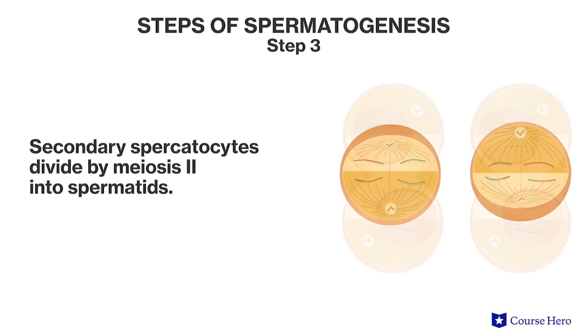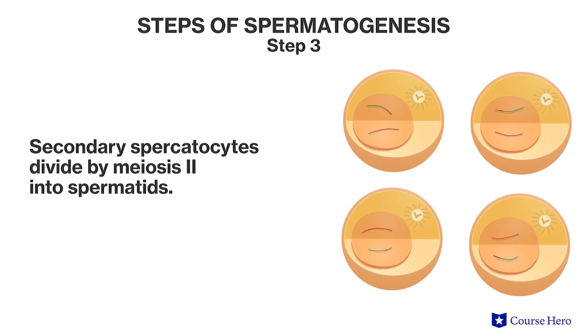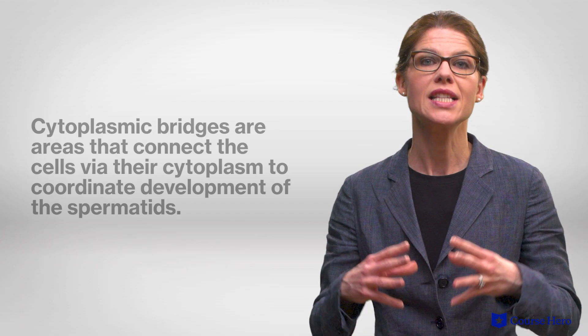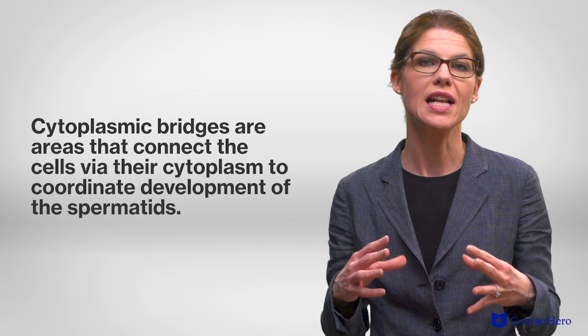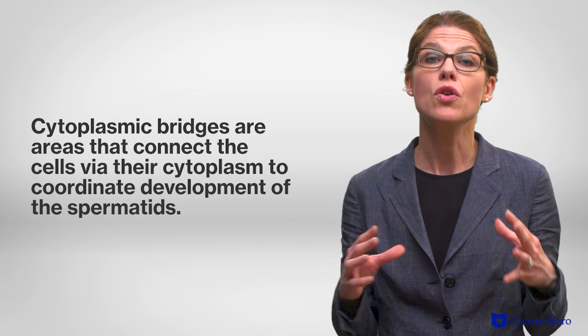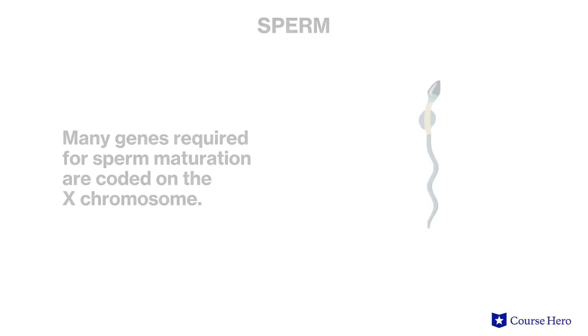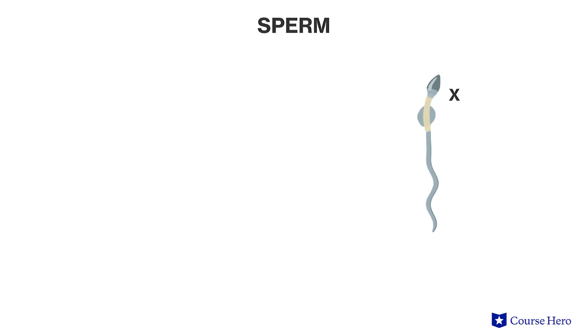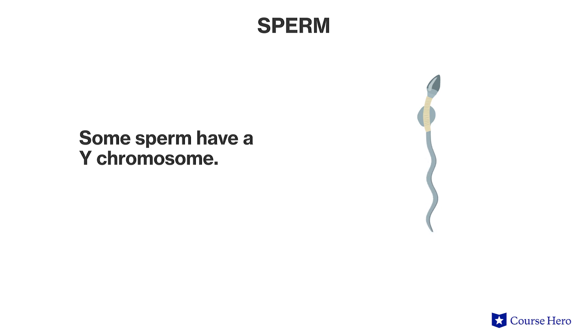Step three: the secondary spermatocytes divide by meiosis II into spermatids, which are immature sperm cells. These stay connected to each other via cytoplasmic bridges — areas that connect the cells via the cytoplasm to coordinate development of the spermatids. Many genes required for sperm maturation are coded on the X chromosome, but not all sperm have an X chromosome — some will have a Y chromosome. By staying connected via the cytoplasm, the new spermatocytes are able to share the necessary genetic information.